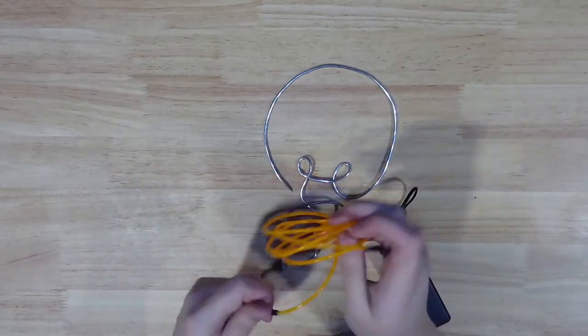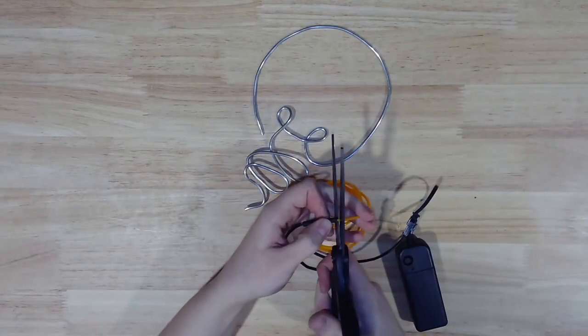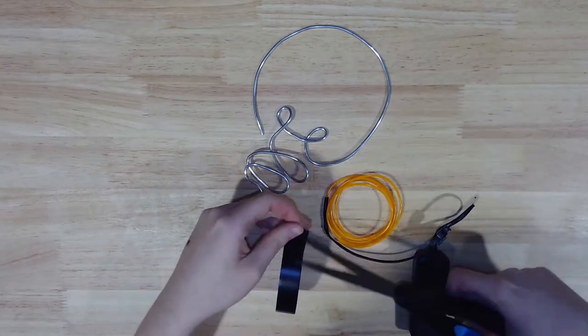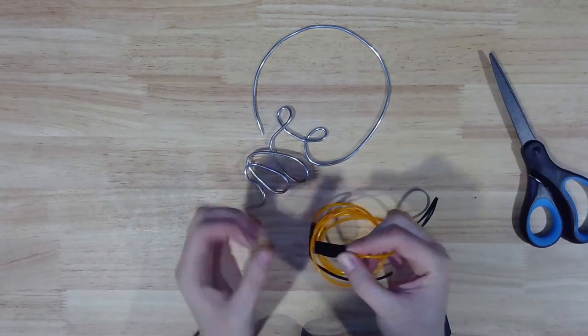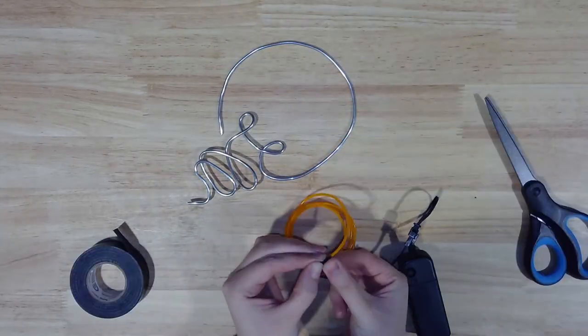Another great thing about EL Wire, you can cut it to size without damaging it. With the light turned completely off, snip off the extra connector that's on the opposite end of your wire from the battery pack. We won't need it for this project. Next, cut a small piece of electrical tape and fold it over the raw end of the wire to protect it.